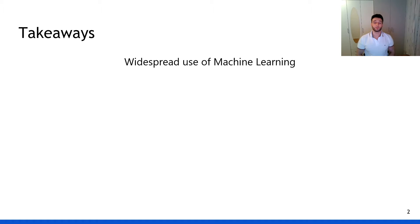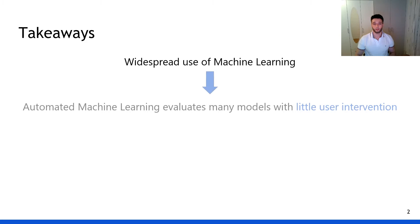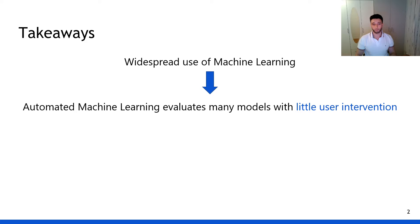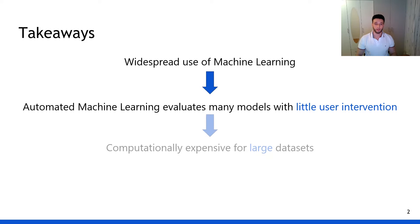With the ever-increasing amount of data, more and more fields are able to utilize the power of machine learning to solve a variety of tasks. Automated machine learning aims to democratize this even further by repeatedly generating and validating many candidate pipelines at the click of a button. Unfortunately, this process takes a lot of compute power, which scales with the amount of input data.